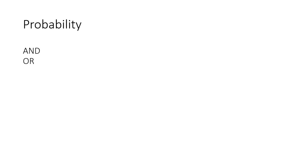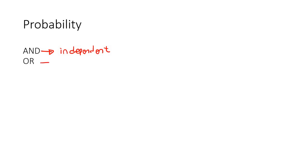Hey guys, hope you're well. So we're going to carry on with probability now, and we're going to be looking at questions that have the words 'and' and the words 'or'. Now with the word 'and', your teacher might have explained something in class with regards to independent, and then for 'or', they might have used the words 'mutually exclusive'.